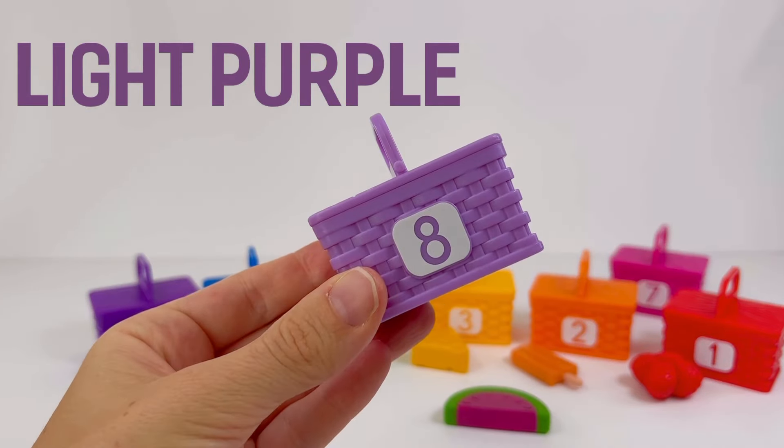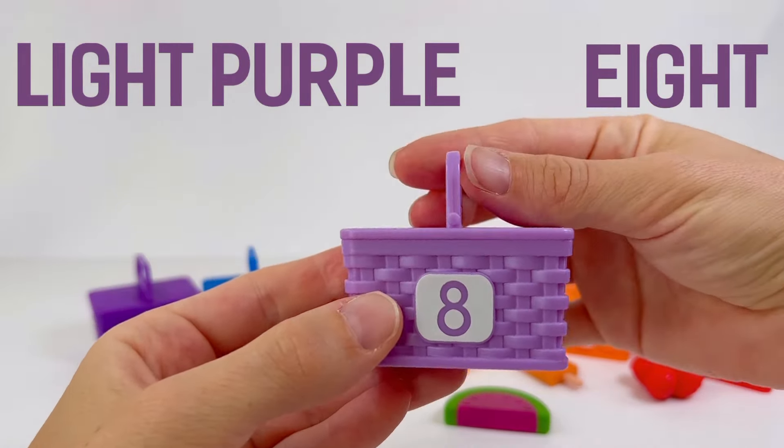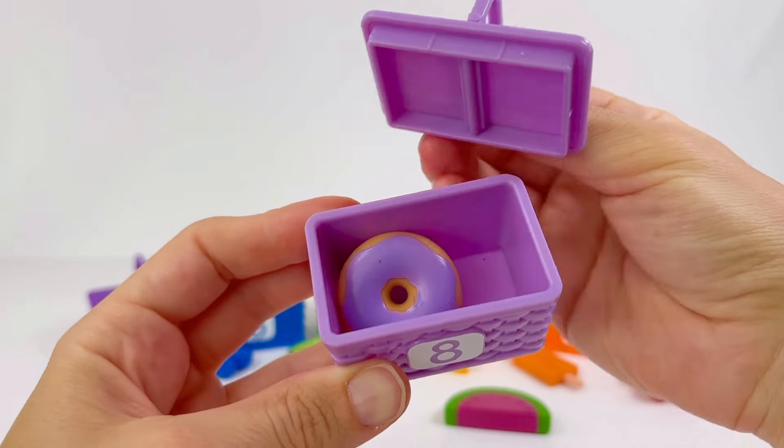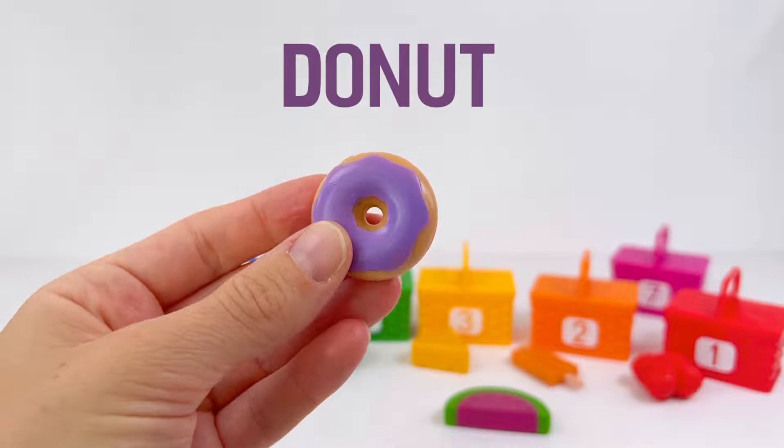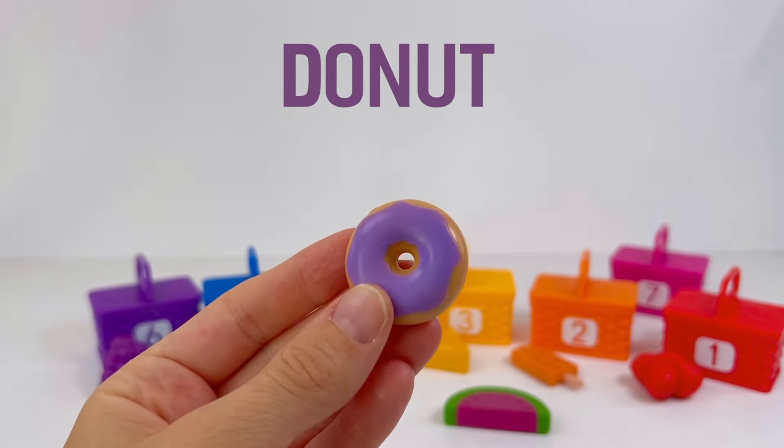This picnic basket is light purple and has the number eight on the front. Inside is a donut with light purple icing.